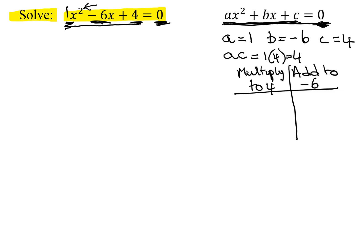Since it multiplies to a positive, the signs are the same, and they have to add to a negative. That means both of the signs have to be negative. So here are my only choices, negative 1 and negative 4. And that adds up to negative 5. Negative 2 times negative 2 is positive 4, but that adds up to negative 4. Therefore, this one's not going to factor, so I'm going to have to use the quadratic formula.